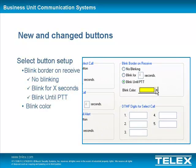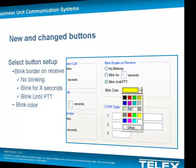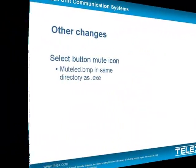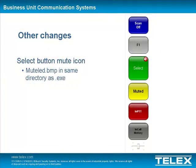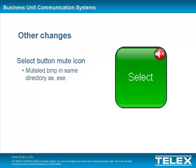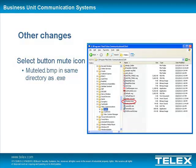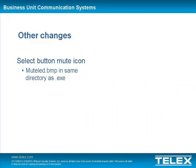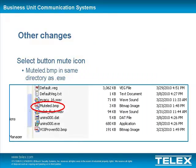The blink color is the color the console will use when blinking the border. A new activity icon was also added to the Select Button. The MuteLED will be displayed on the Select Button in the upper right-hand corner whenever that line is muted. The user can customize the icon by adding a file named MuteLED.bmp in the same directory as the executable file.